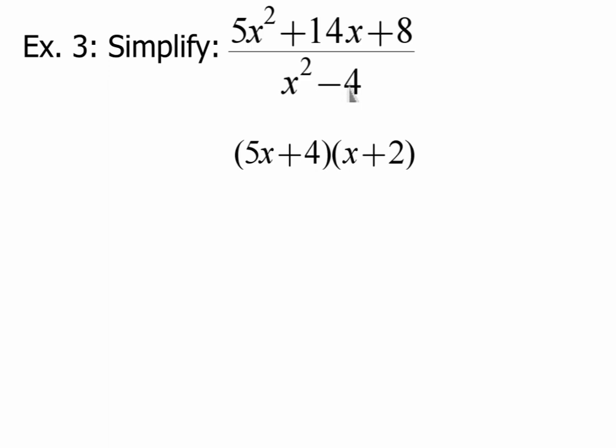On the bottom, x squared minus 4, we can use a factoring pattern. This is difference of squares. So I do the square root of x squared and I get x. Square root of 4 is 2. So this is x minus 2 times x plus 2.